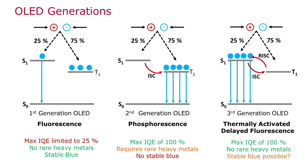TADF materials have enabled a third generation of OLEDs. In these materials there is a small energy gap between the singlet and the triplet that can be bridged by increasing the temperature. This opens up a reverse inter-system crossing mechanism by which the triplet population moves up to the singlet state and then emits fluorescence. Therefore, a 100% IQE is achievable without the use of rare heavy metals and a stable blue pixel is possible.